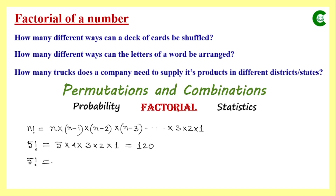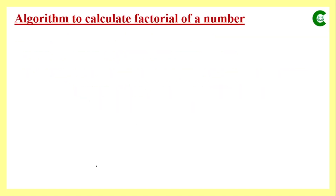In programming, however, we start the multiplication from 1 and increase the number — so 1, then 2, then 3 — continuing that multiplication up to the given number. If n is 5, we start from 1 and continue multiplying until we reach 5. This is the logic we will apply to find the factorial of any given positive integer.